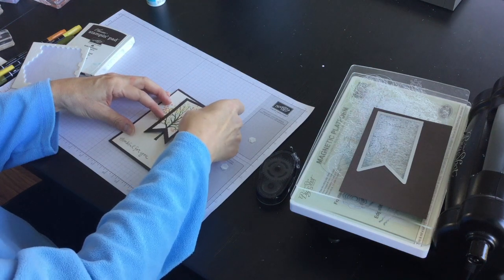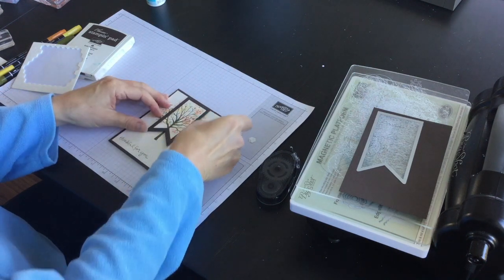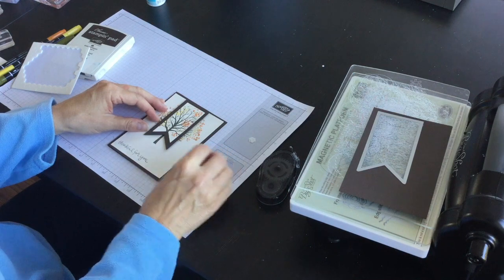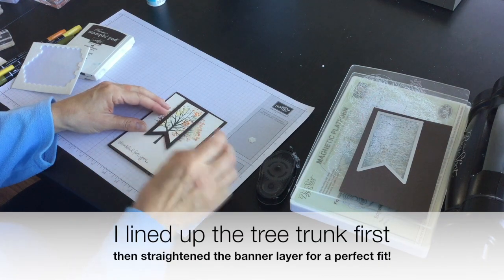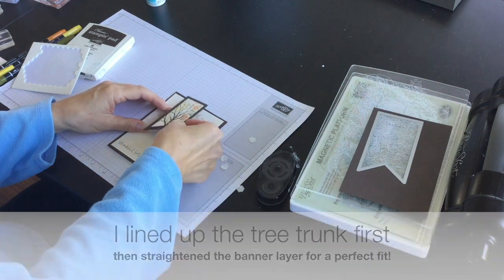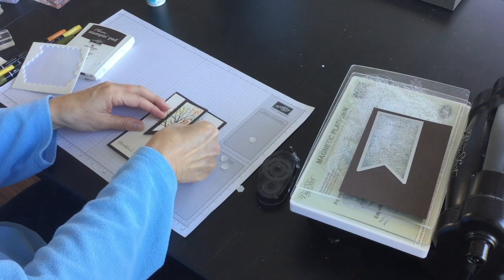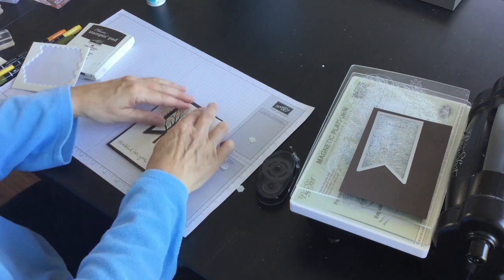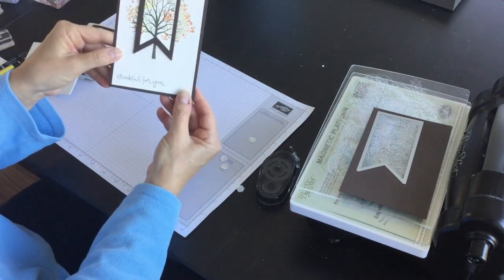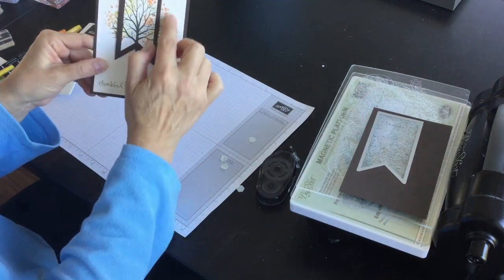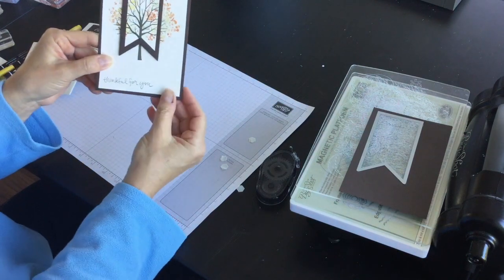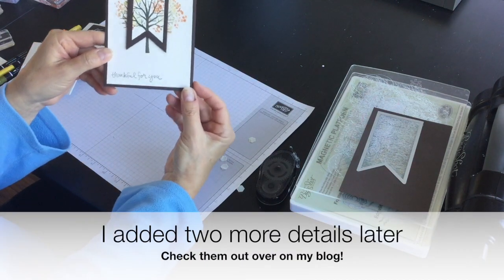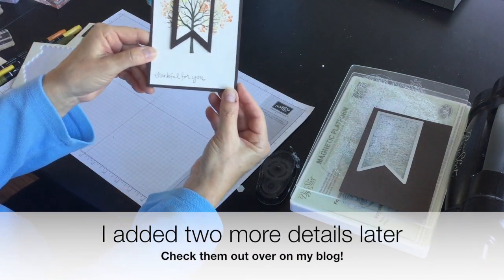You want to line it up, just going to move it over a little bit, like so. So it looks like we have the tree underneath and then we've got this beautiful tree layer on top for a nice and fun clean and simple card idea.